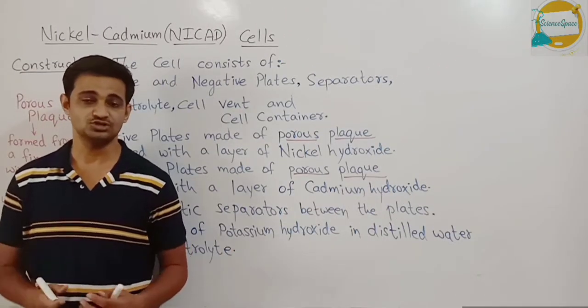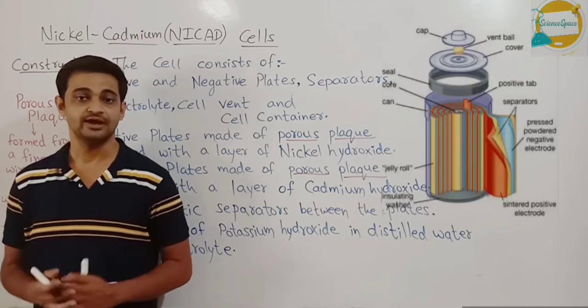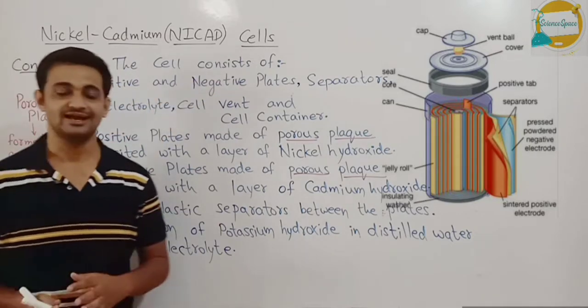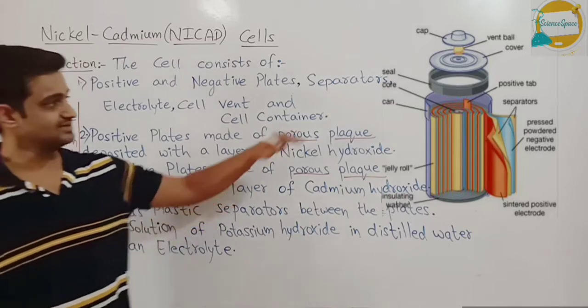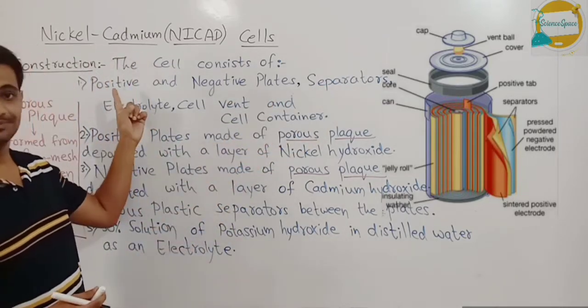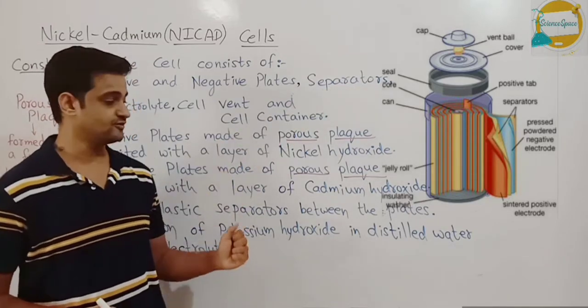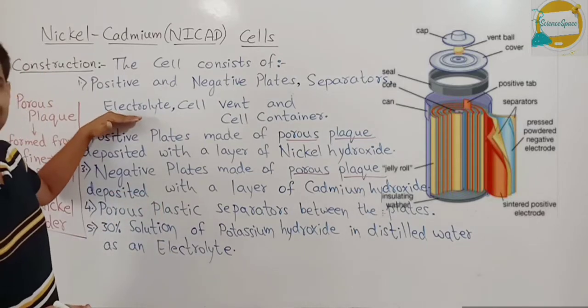So students, let us first of all study the construction of a Nickel Cadmium cell. It consists of positive and negative plates, that is the electrodes which are the cathode and the anode. Then there are separators. These separators separate positive and negative plates. The separators are made up of plastic porous material and then there is an electrolyte.